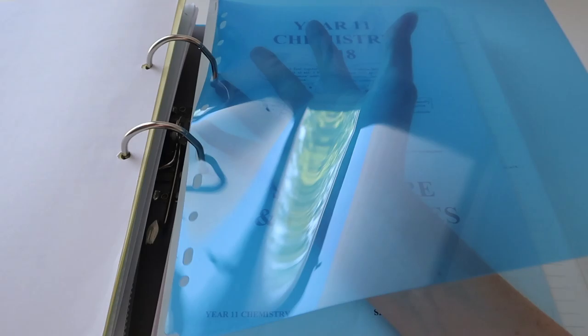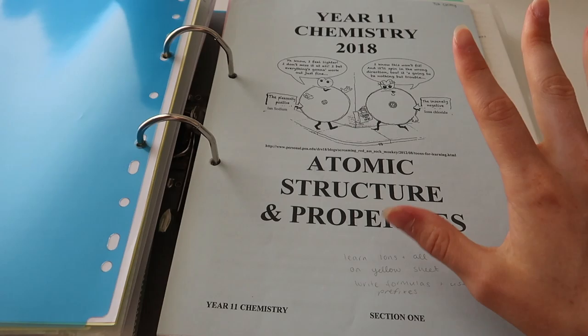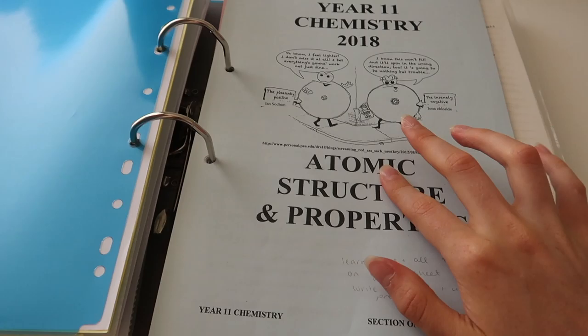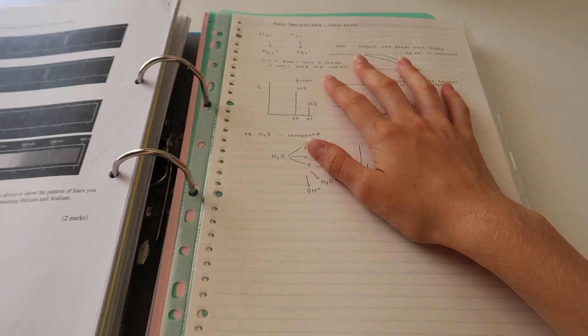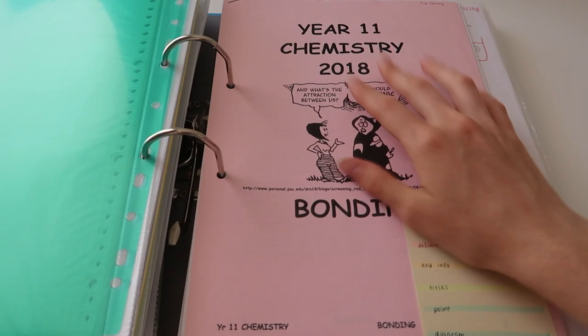And now we start just going through every single topic that I did. So for each topic we got a booklet and then we write notes in class and so that is basically what I filed in each topic section. So this is a section for the first topic, atomic structure and properties. So this is the class booklet that we got given and then these are all of the notes I made in class. They're just all in one file thing. So that's just kind of how my file goes.